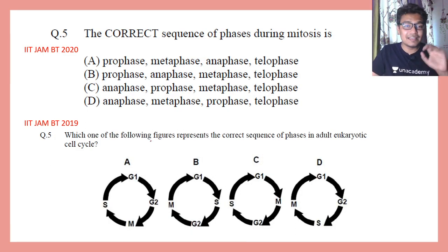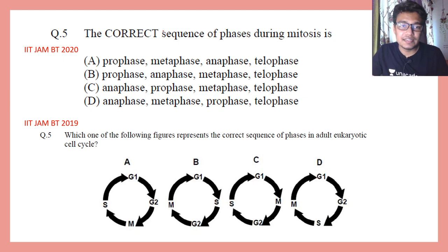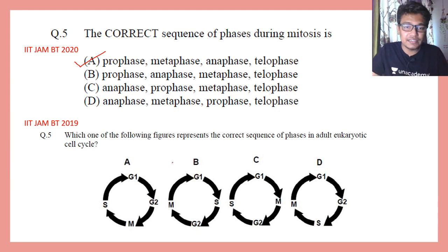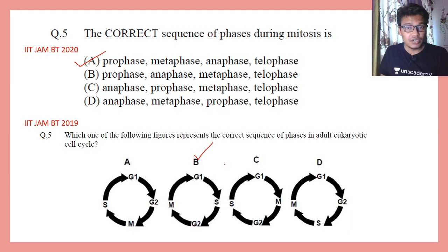In the exam corner: in IIT JAM 2020 and 2019, a similar type of question was asked about the sequence of phases in the cell cycle. You have to identify the correct sequence of cell cycle phases. For mitosis: prophase, metaphase, anaphase, and telophase is the correct sequence. For interphase in 2019, you had to identify the correct statement — G1 goes to S, S goes to G2, then M. Sequence-related questions focused on cell division are very important.